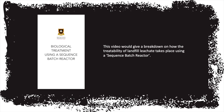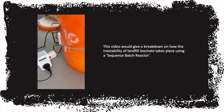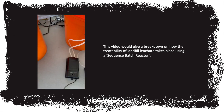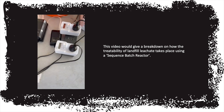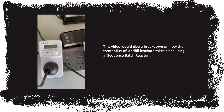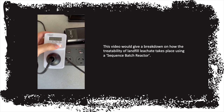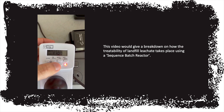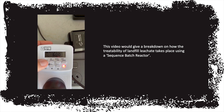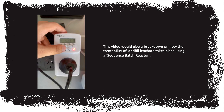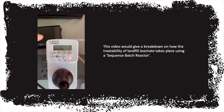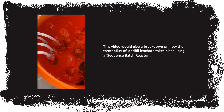This video gives a breakdown of how the treatability of landfill leachate takes place using a sequence batch reactor. You can see the digital timer for the water pump which performs the leachate dosing, with the pipe running through to the reactor. There are two air pumps powered by two digital timers. The air pumps turn on at 11 a.m. and turn off at 6 a.m. the following day, which is a 19-hour operation cycle. The same programming is done for the second air pump.